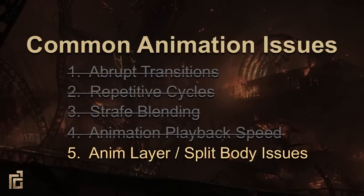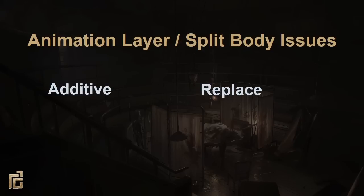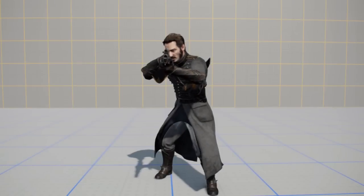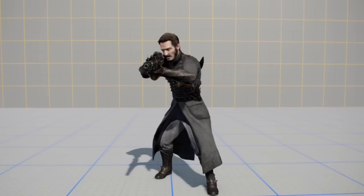Moving on to animation layer and split body issues. Animation layers aren't a new concept — they have a lot of great uses in games, but also some pitfalls. There are two ways of using animation layers on a joint: additive or replace. Additive layers add animation data together, which is useful when you want to retain motion but change a pose. Replace layers ignore all the animation data beneath them, which is useful when you want to overwrite the motion of other layers completely. In The Order, we use animation layers for things like aim offsets and weapon hand grips. Here's an example of how you use upper body additive animation layers to aim in any direction while retaining the full body motion of the aim idle.